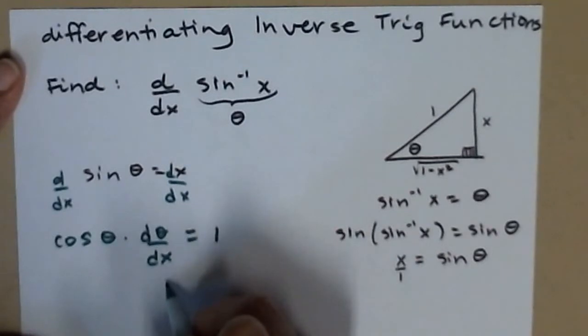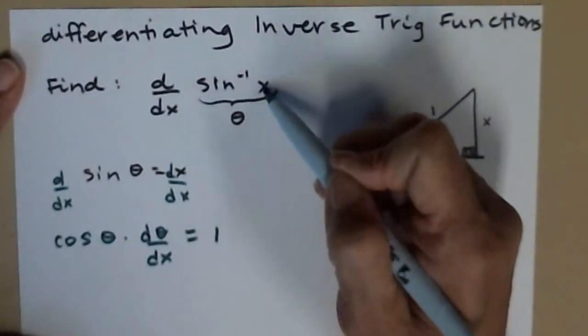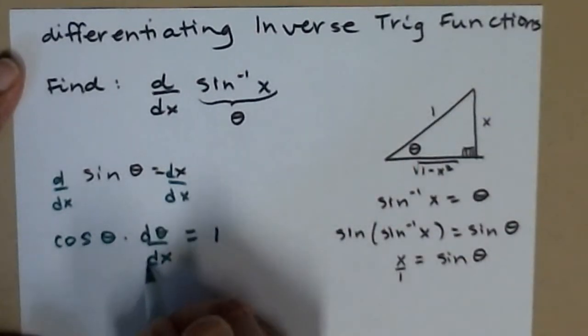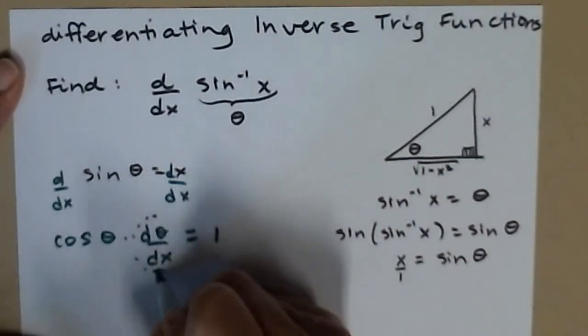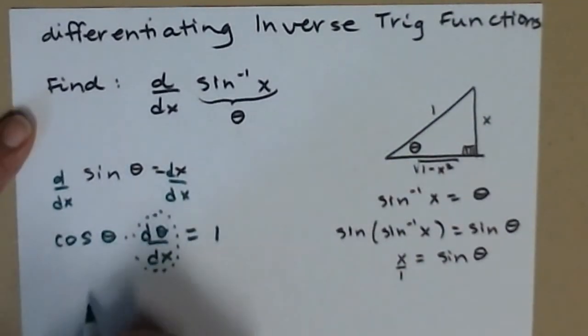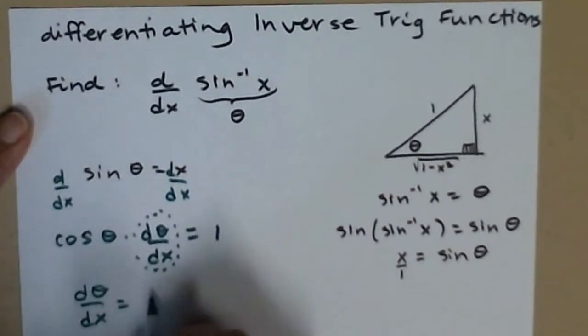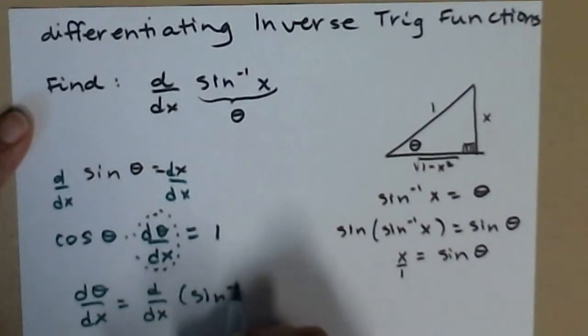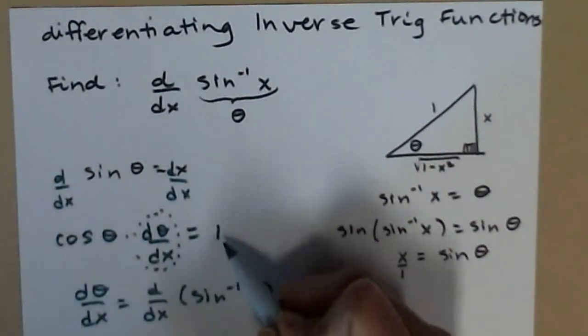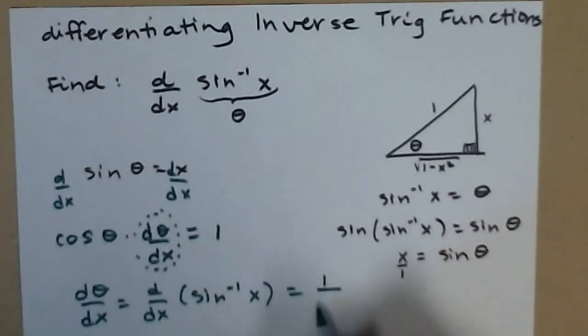So dθ/dx, well remember theta is the same thing as the inverse sine of x. So this is actually what I wanted, this amount right here. This is the derivative of the inverse sine right there. So that's what I want to solve for. So dθ/dx, which is the same thing as d/dx of the inverse sine of x, is equal to...